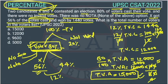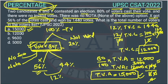So the total number of voters in the voter list is 15,000, and 12,000 actually voted. The answer to this question is Option A. We can also solve this using another method.